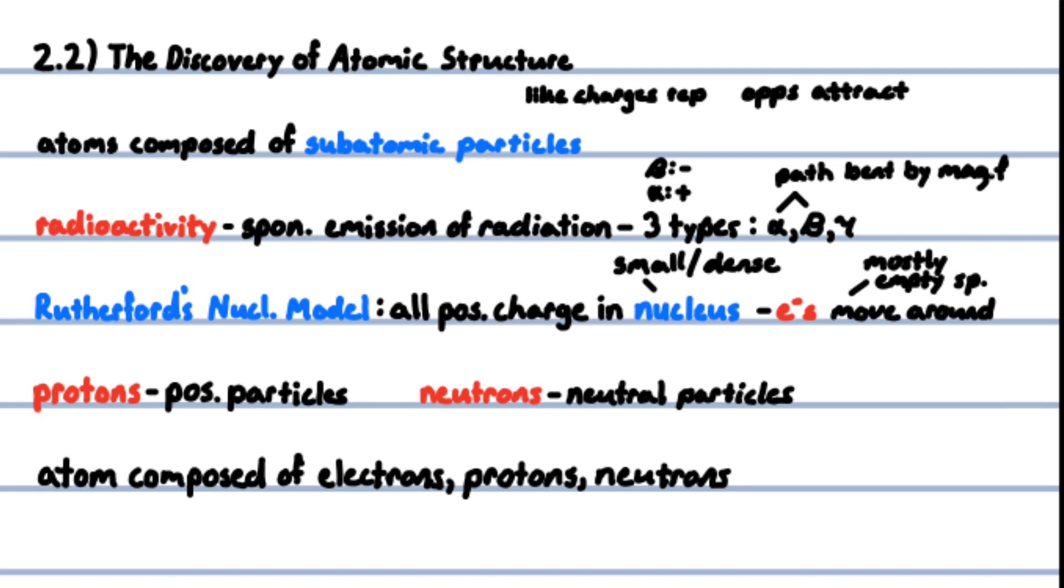Alpha particles have a positive charge and are attracted to negative plates. Rutherford's nuclear model of the atom showed that most of the mass and all of the gold atom's positive charge reside in a very small, dense region called the nucleus. Most of the space around the nucleus is empty, in which electrons move around the nucleus.